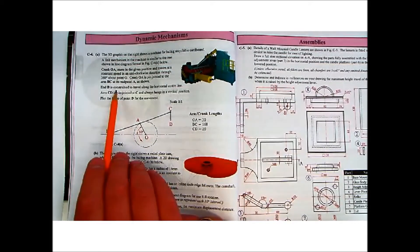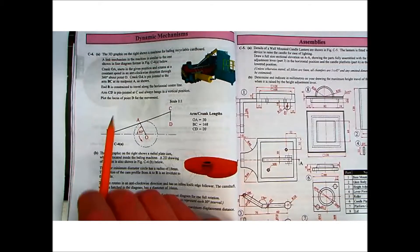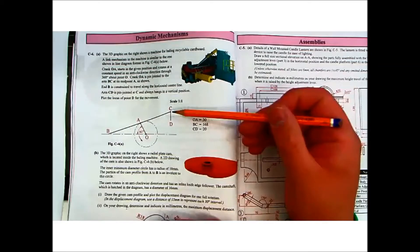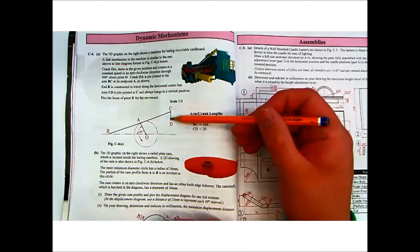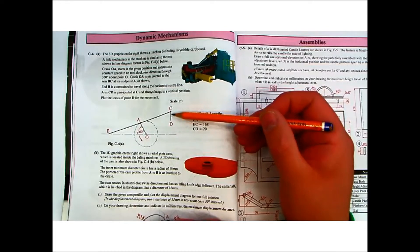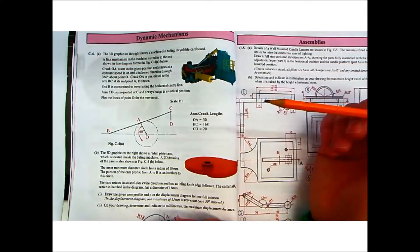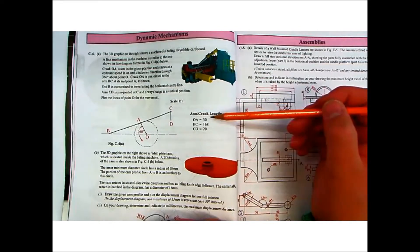Remember, there's a lot of constraints in this. You've got to know what they are and be able to understand them. The arm CD is pin-jointed at C and always hangs in a vertical position. So CD always hangs straight down like so because it's pin-jointed at C. Plot the locus of point D for the movement.